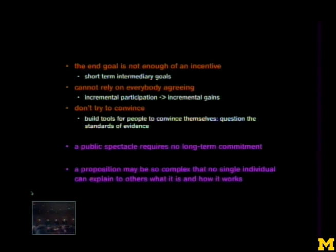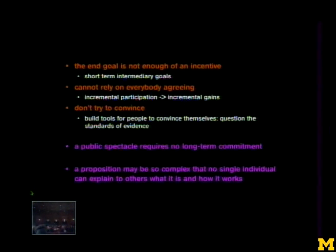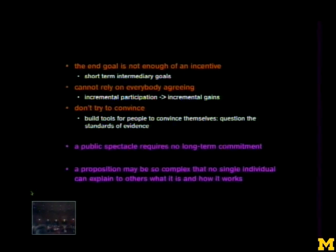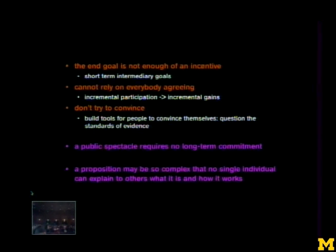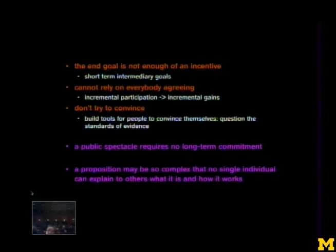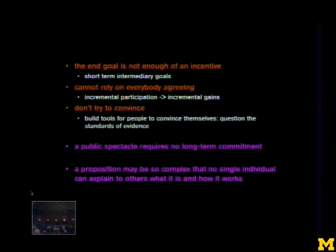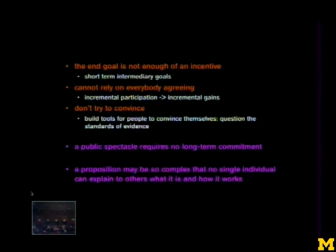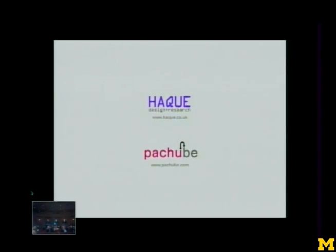The final point is that the proposition you come up with when designing a participative system may be so complex that it's impossible for a single individual to explain it to others. There's an old idea of design where it's about simplifying things for people, but that just doesn't work in the complex environment we exist in. It's not about dumbing things down. The kinds of complex problems we're facing require relatively complex solutions involving multiple players and multiple disciplines — likely so complex that no single individual will contain all of that knowledge. Thank you very much.